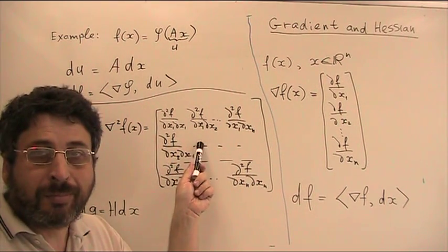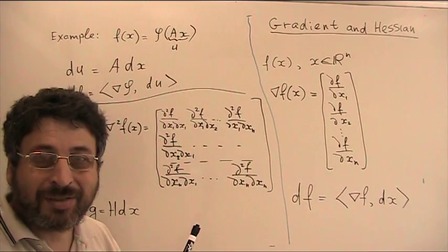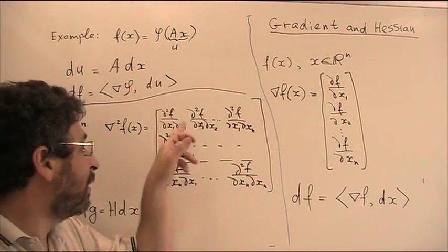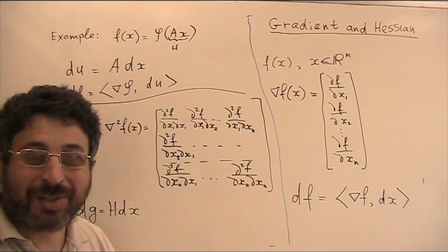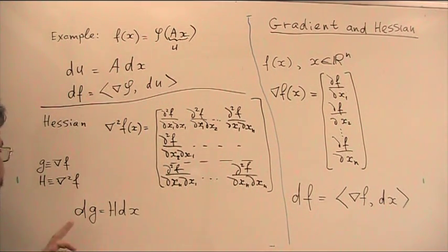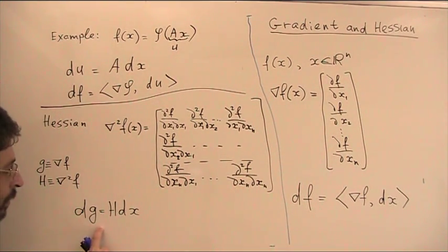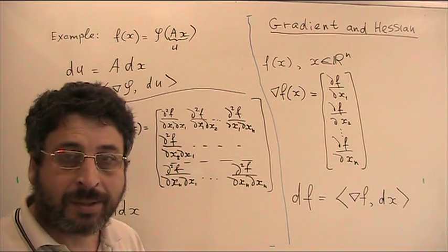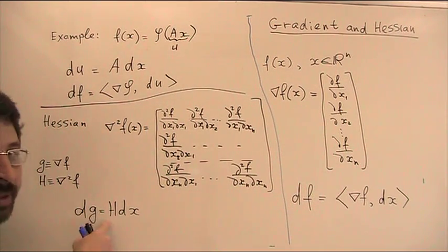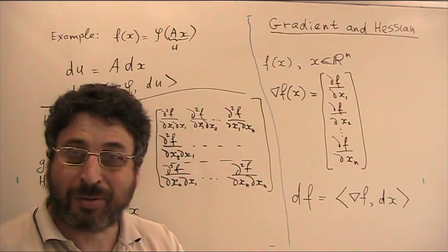And now I remind you what is Hessian of multivariate function. Hessian is a matrix of mixed second derivatives, partial second derivatives. This is a quadratic and symmetric matrix. And we also will denote, to shorten our expressions, gradient of f as g and Hessian as H. And a very important property is that the differential of g is H multiplied by dx. And this formula is very convenient for developing Hessian of complicated function.